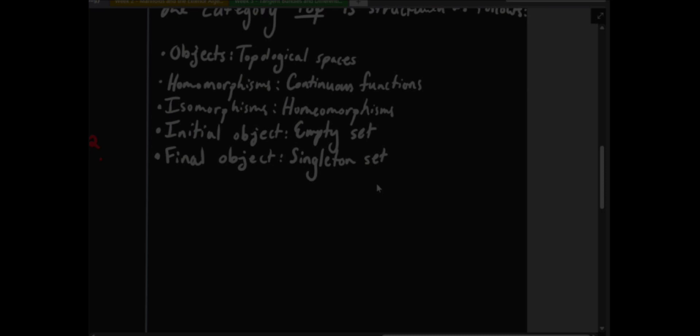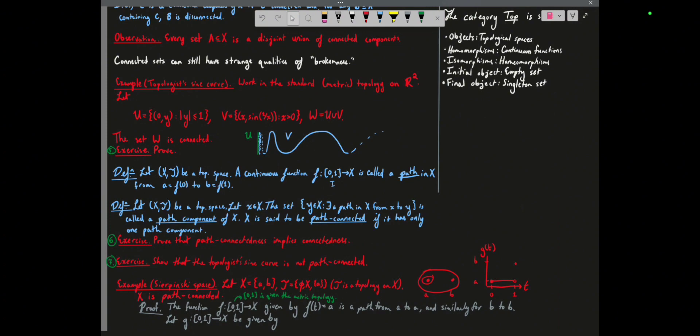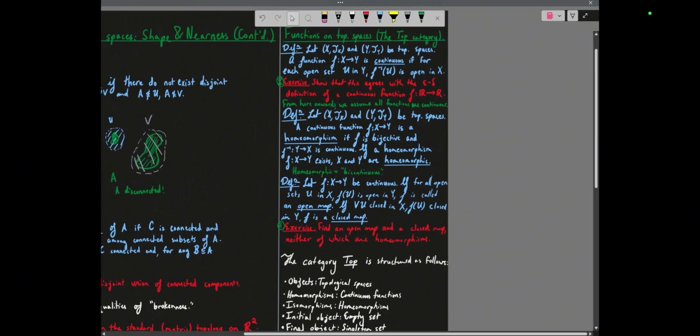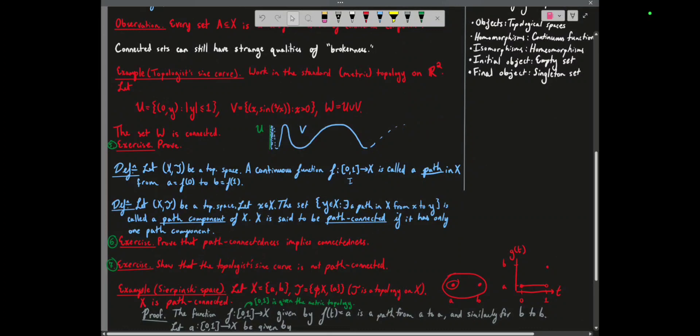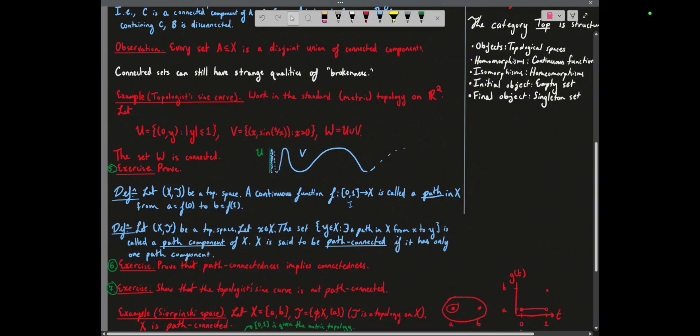Coming back after the recording session to cover something I forgot: the entire reason I introduced continuous functions on topological spaces is to introduce the notion of a path and then talk about path-connected spaces, which is a stronger notion than connectedness. The exercise is to show that path-connectedness implies connectedness, and also that the topologist's sine curve, although connected, is not path-connected.